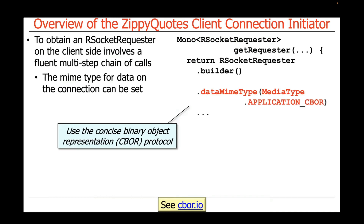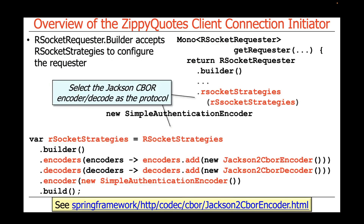We're then going to set the MIME type for the data. In this case, we're going to use application Concise Binary Object Representation, or CBOR. And then we're going to set up the strategies that correspond to that MIME type, which are going to be the Jackson CBOR encoder and decoder — which is how we encode the messages in binary.